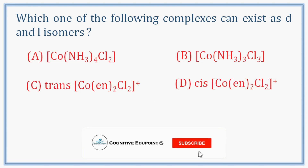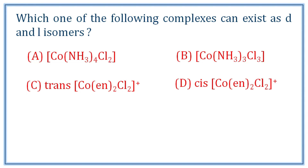First question from Coordination Chemistry: which one of the following complexes can exist as D and L isomers? There are four complexes to consider. Option A is Co(NH3)4Cl2, which is of MA4B2 type. In this complex, the cis and trans isomers are optically inactive, so a DL pair is not possible.